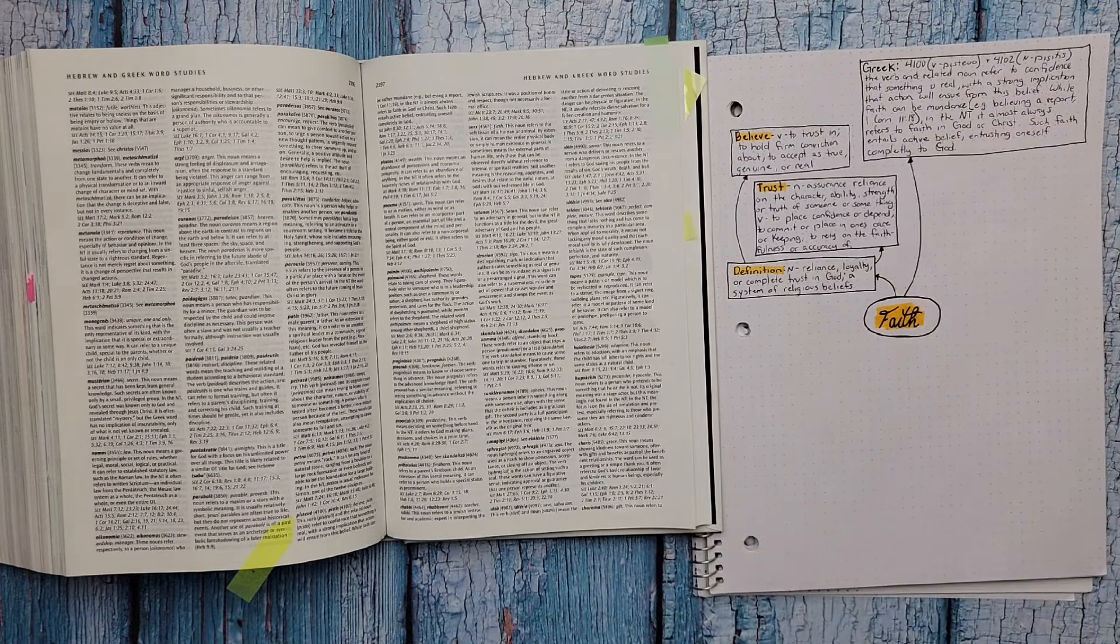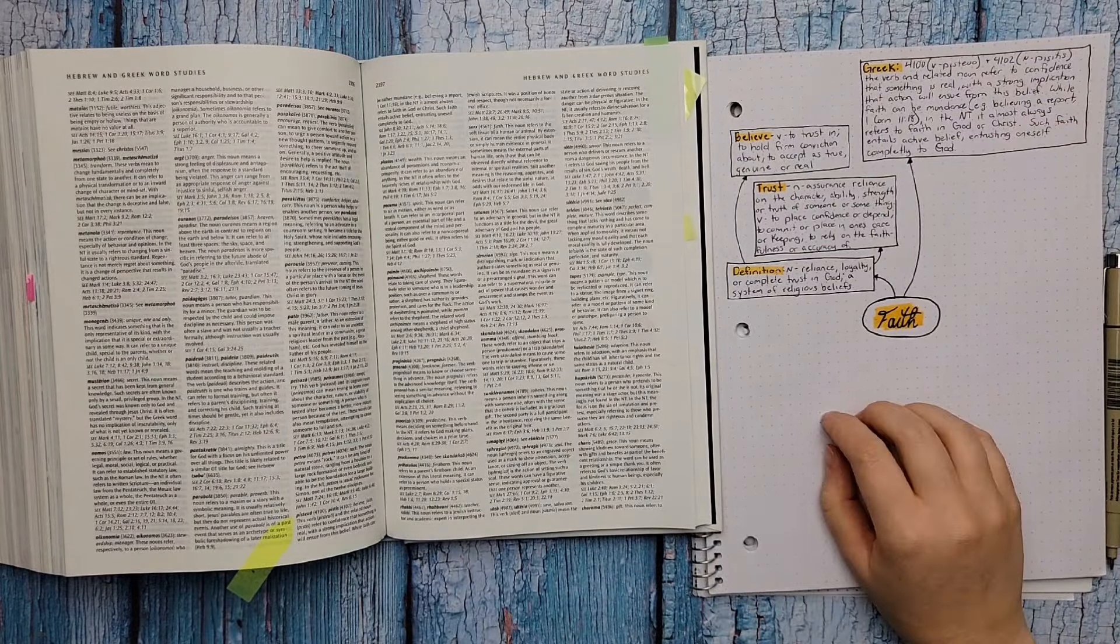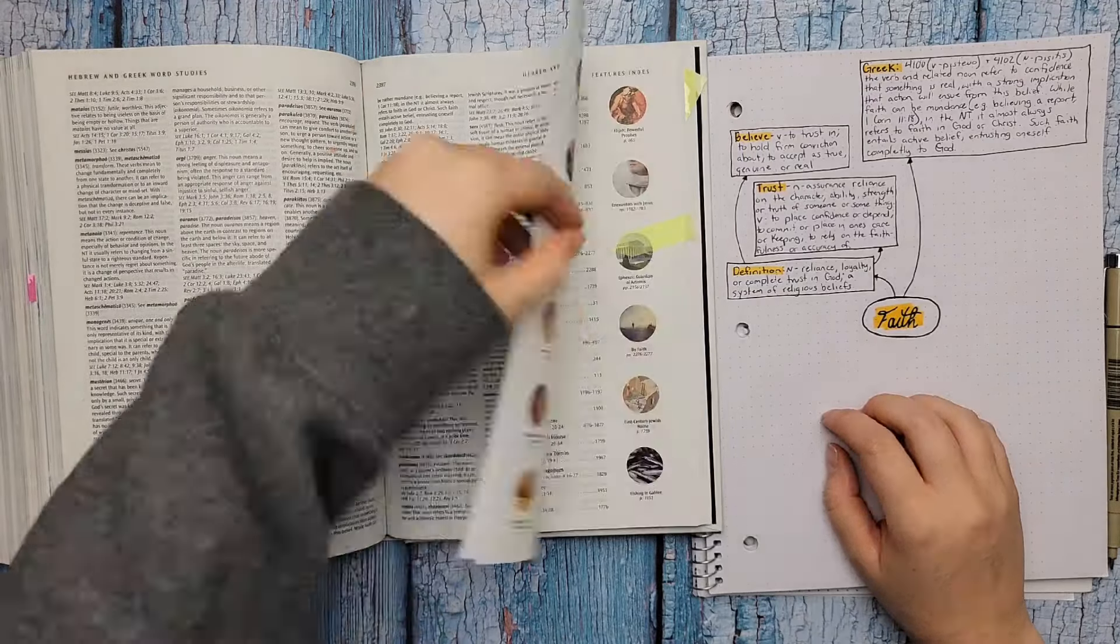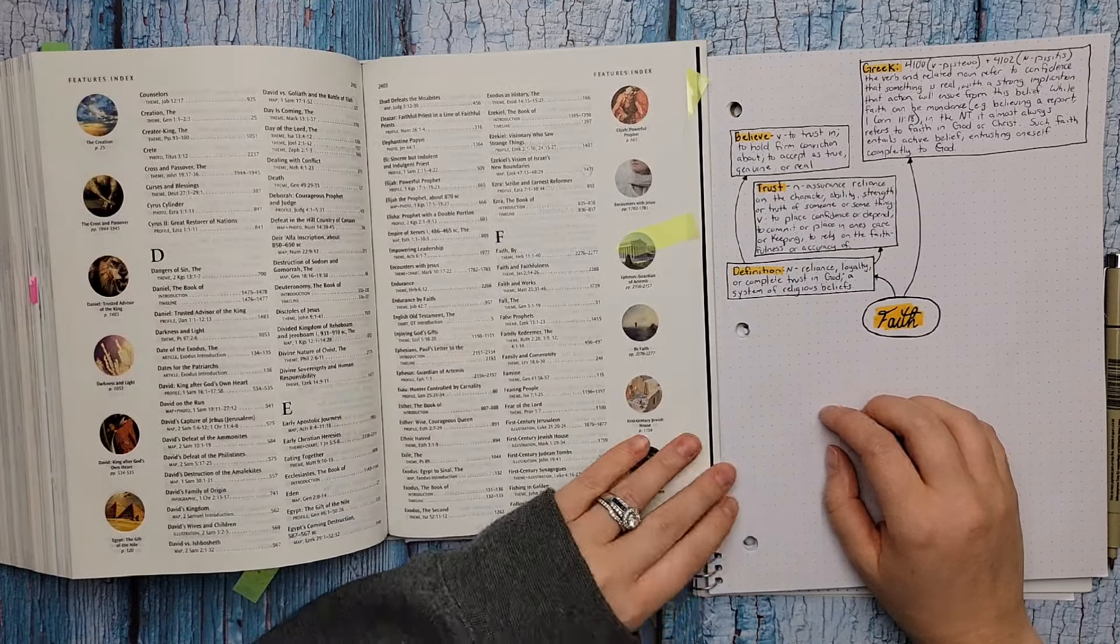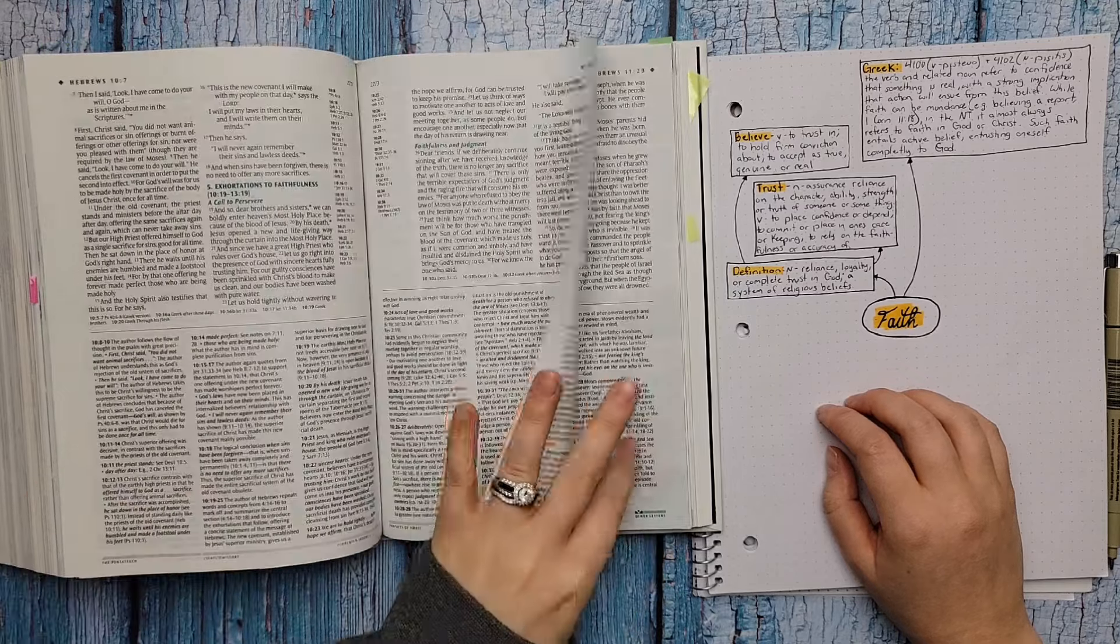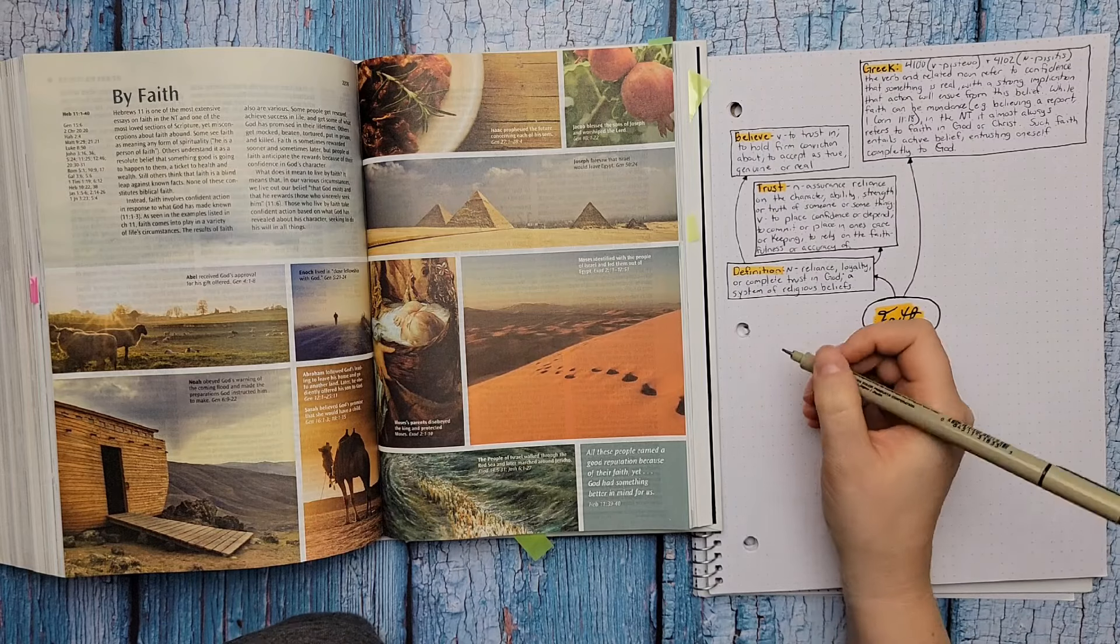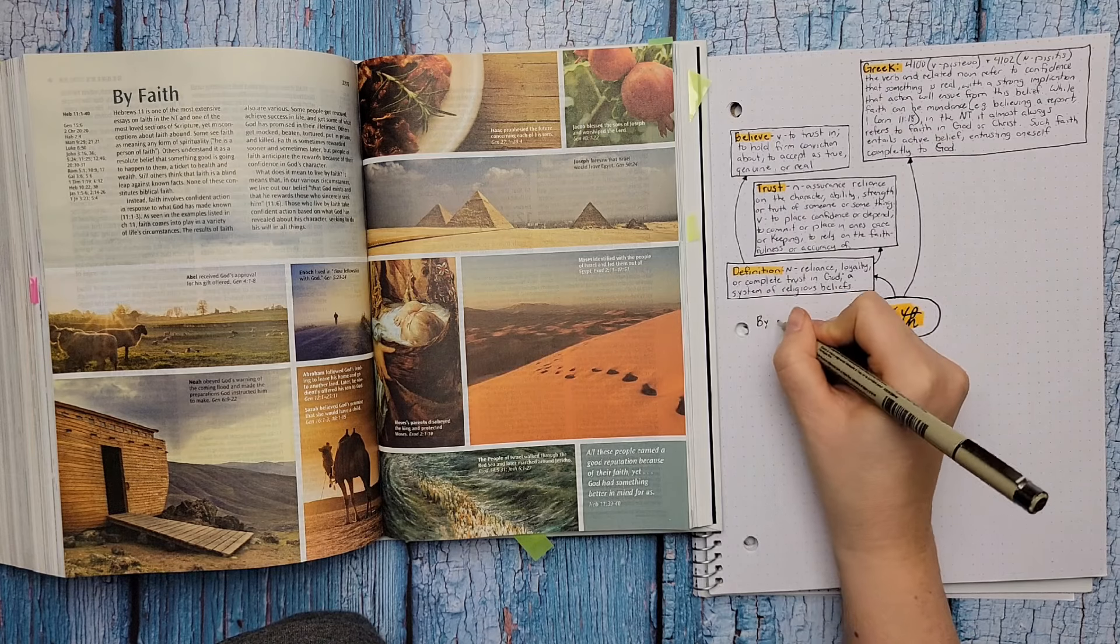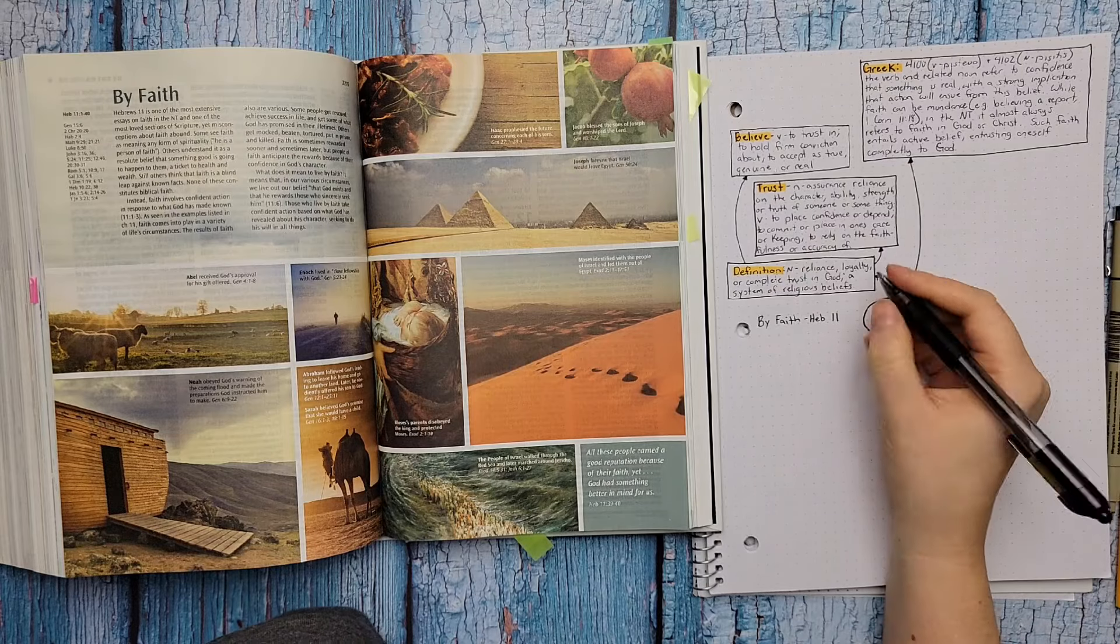So after we do that, we're going to go to the section in the back of the Bible which has all the notes. So it's called featured indexes. And what that is, is it has all the different kinds of notes together in one place so you can find it. And they do have a few that are about faith, three different ones. And so we're going to go to each one and kind of read about them and then summarize what we're reading.